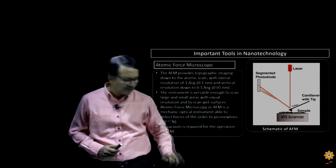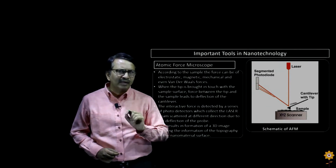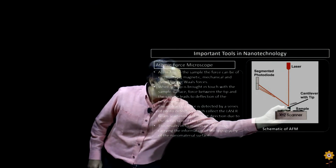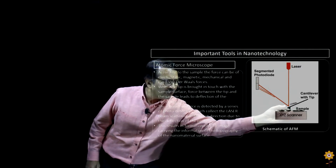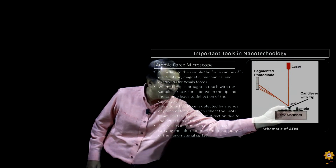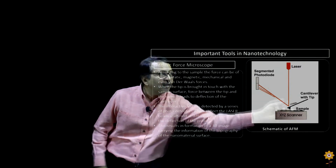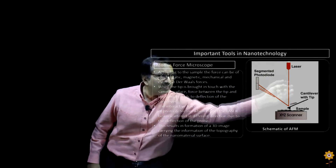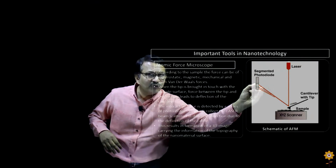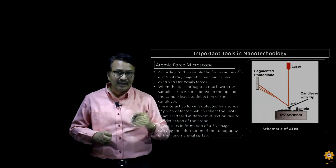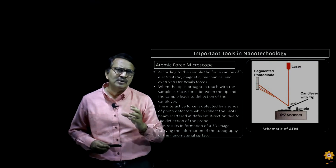Let us now see how an AFM functions. Here is a schematic diagram of an AFM. One of the basic components of an AFM is the cantilever tip, which scans the sample placed below it. Since AFM is an opto-mechanical device, there is a mechanical part — the cantilever — and an optical part: a laser beam that falls on the cantilever. As the tip moves, the deflections of the tip are captured by a series of photodiodes. These deflections combined with the XY scanner result in a 3D topography of the actual nano surface.